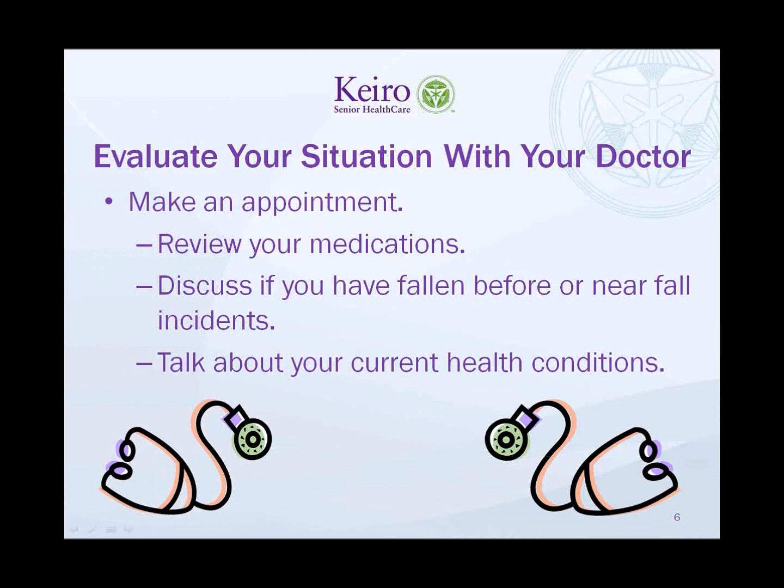Discuss if you have fallen before or other near-fall incidents. Include as much detail of any previous fall or close falling instances, as this can help your doctor identify specific fall prevention strategies and target what could be the problem. Talk about your current health conditions — certain eye and ear conditions may increase your risk of falls, so it is important to get routine eye and ear examinations. Be prepared to discuss any chronic health conditions and how they may affect your walking or balance.